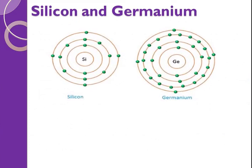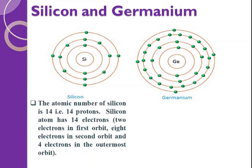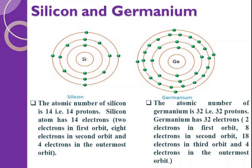Here we study about the germanium and silicon structure. The atomic number of silicon is 14, meaning silicon has 14 protons — two electrons in the first orbit, eight electrons in the second orbit, and four electrons in the outermost orbit. Germanium has atomic number 32, so it has two electrons in the first orbit, eight in the second, 18 in the third, and four electrons in the outermost orbit. So we can say that silicon and germanium are tetravalent atoms — they have four electrons in the outermost orbit.